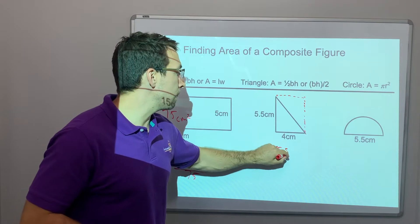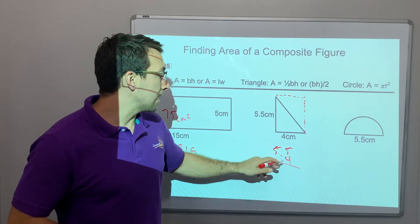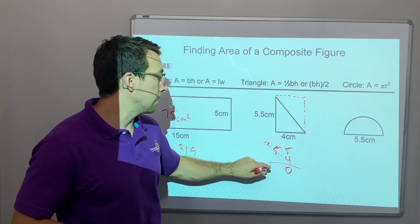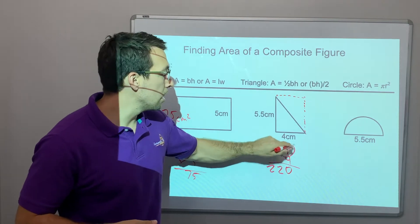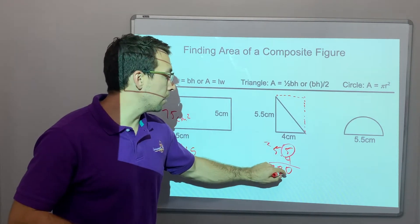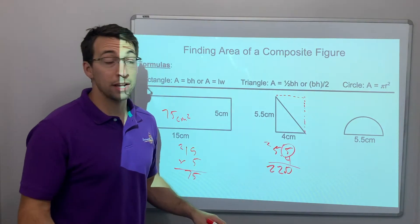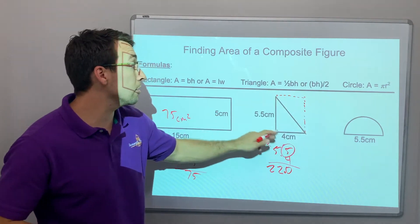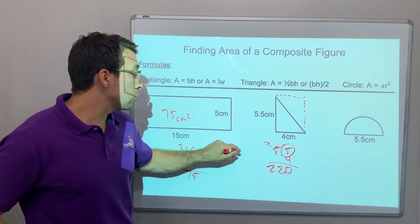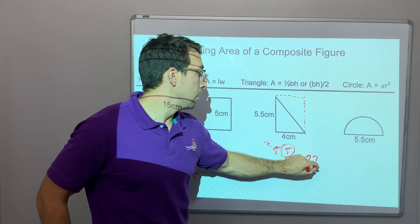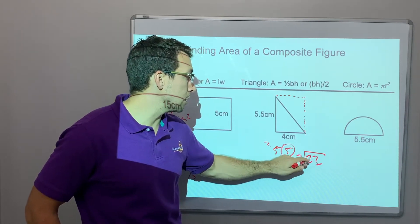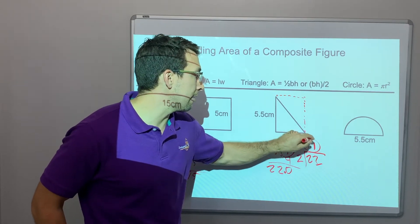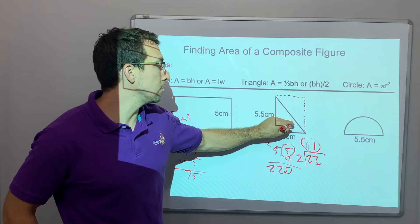So 5.5 times 4. 5 times 4 is 20. 5 times 4 is 20 plus 2 is 22. And there's one decimal in the problem, so it's not 220, it's 22. That would be the entire square. Now we have to divide that by 2. So 22 divided by 2 is 2 goes into 2 one time, 2 goes into 2 one time. So our answer is 11. So this is 11 centimeters squared.